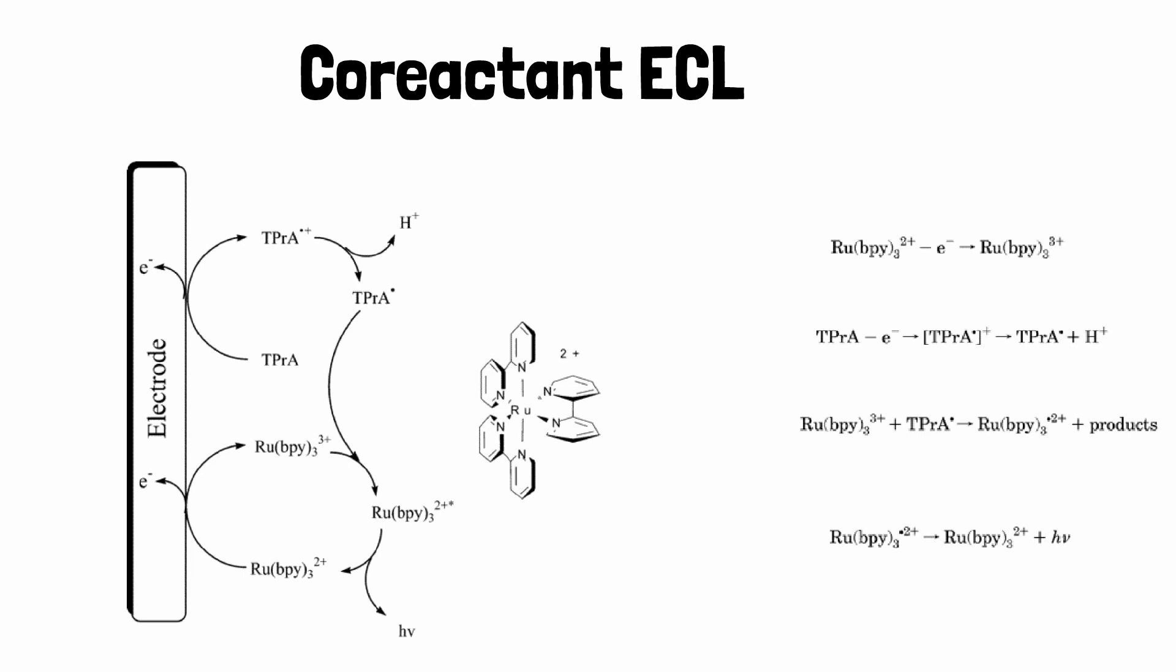Recent work utilizing cyclic voltammetric simulations and SECM-ECL experiments on the Ru(bpy)3^2+/TPRA system indicates that TPRA+ may also play a role in the generation of ECL. The half-life of TPRA+ was estimated at 0.2 milliseconds, and direct evidence for the existence of the intermediate was found via flow cell electron spin resonance experiments.